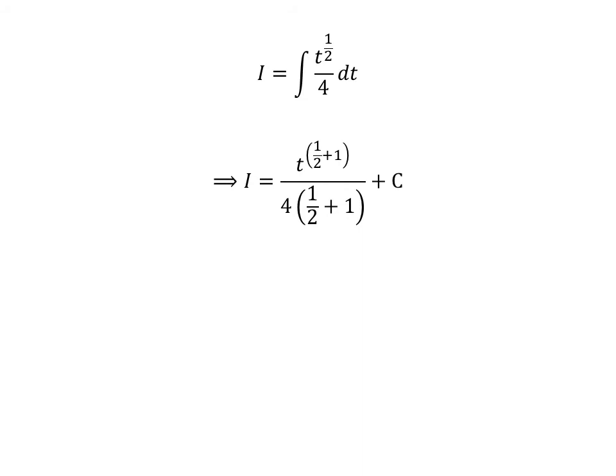We know the integral of t raised to the power of n is equal to t raised to the power of n plus 1, upon n plus 1. So i is equal to t raised to the power of 1/2 plus 1, upon 4 times (1/2 plus 1), plus capital C. This simplifies to t raised to the power of 3/2, upon 4 times 3/2, plus capital C.